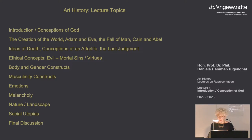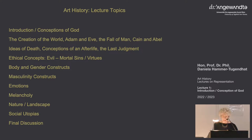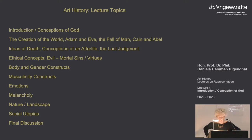We will start today with conceptions of God, then continue with the creation of the world, Adam and Eve, the fall of man, Cain and Abel. Then we will deal with ideas of death, conceptions of the afterlife, and the Last Judgment. We will deal with ethical concepts — evil, mortal sins and virtues — then body and gender constructs, masculinity constructs, emotions, melancholy, nature, landscape, and social utopias. The last topic we probably will not cover because we now have two holidays.